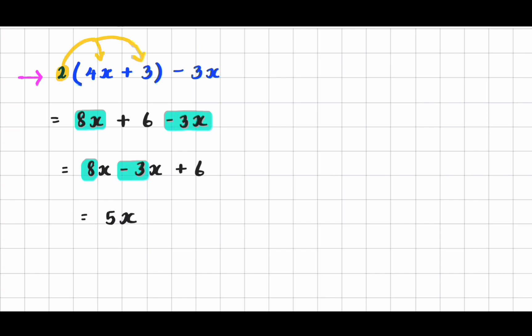When you combine like terms you only deal with the coefficients and you keep the variable the same. And now I am going to bring down my plus 6 because there is nothing to combine that with.